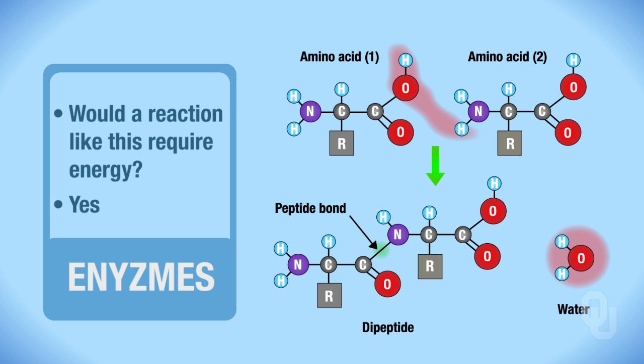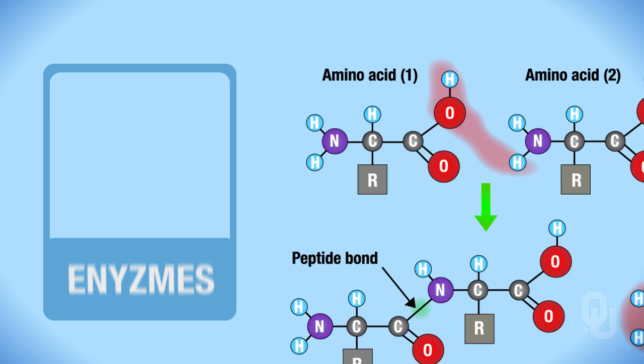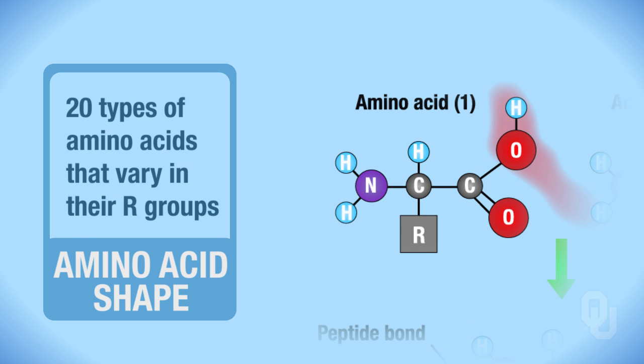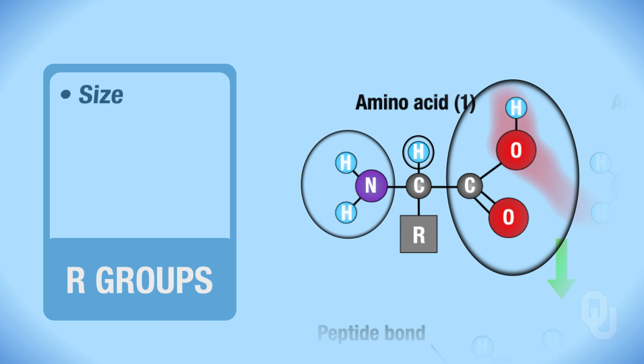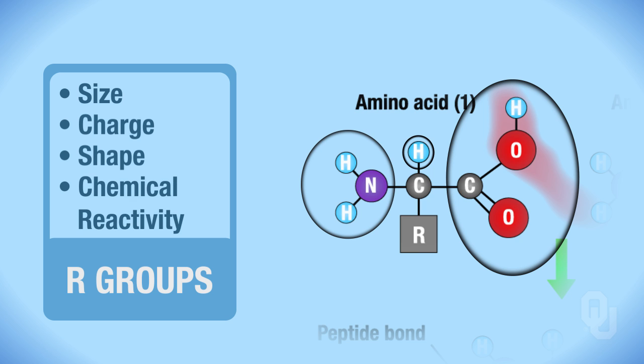Let's think for a minute on how the sequence of amino acids determine the shape of that enzyme. So recall that there are twenty types of amino acids, and they all vary in their R groups. And so here you can see that R group, and you can see the functional groups making up that amino acid. All of these R groups, that's what varies amongst the amino acids. Twenty different R groups. They vary in their size, their charge, their shape, their chemical reactivity, for example.